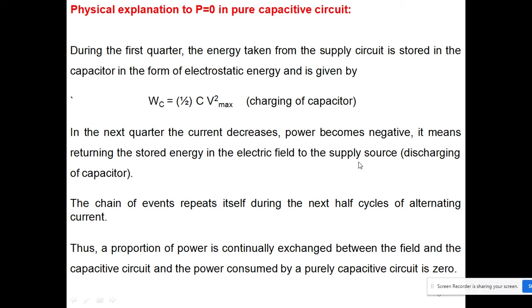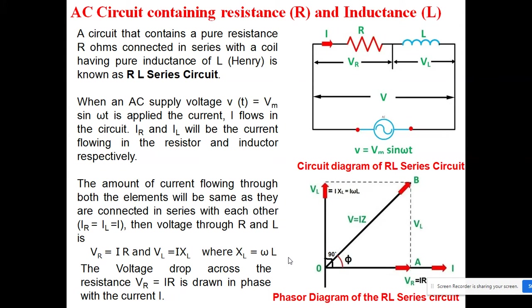In the next quarter, the current decreases and power becomes negative, meaning the stored energy in the electrostatic field is returned to the supply source — this is the discharging of the capacitor. This chain of events repeats itself during each half cycle of the alternating current. Thus energy is continuously exchanged between the electrostatic field and the supply, and the power consumed by a purely capacitive circuit is zero — that is the meaning of P = 0.